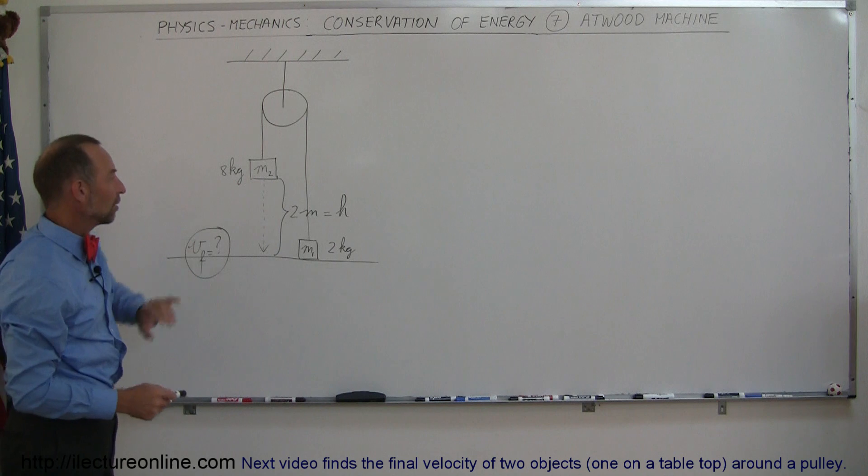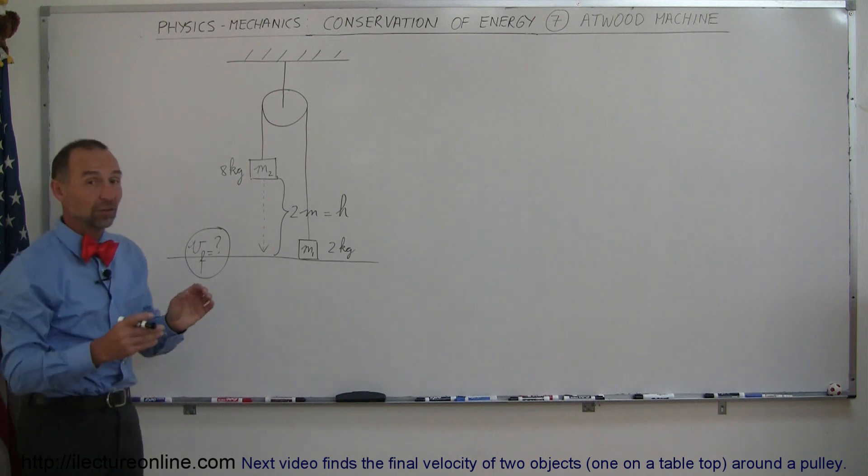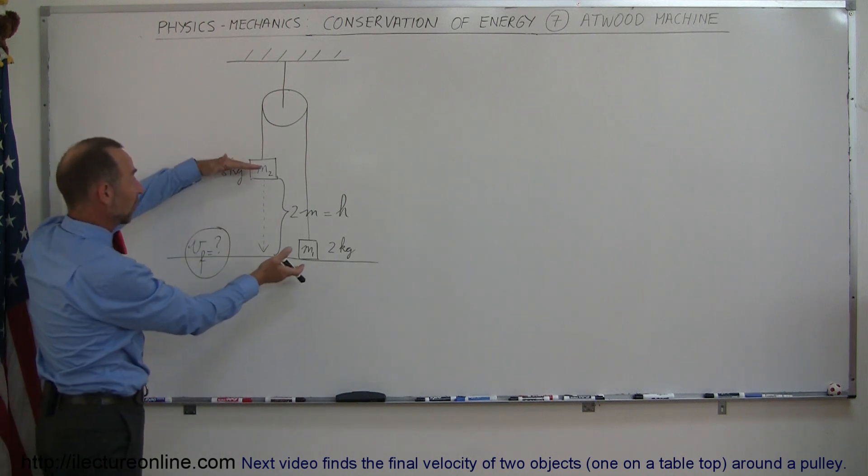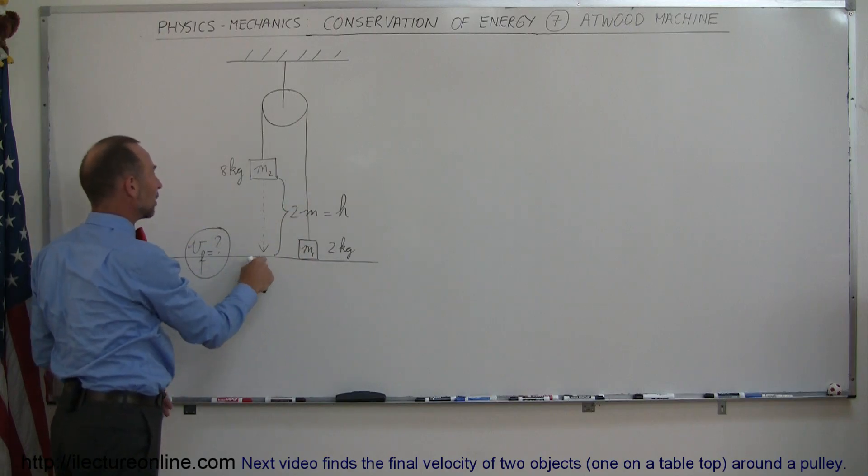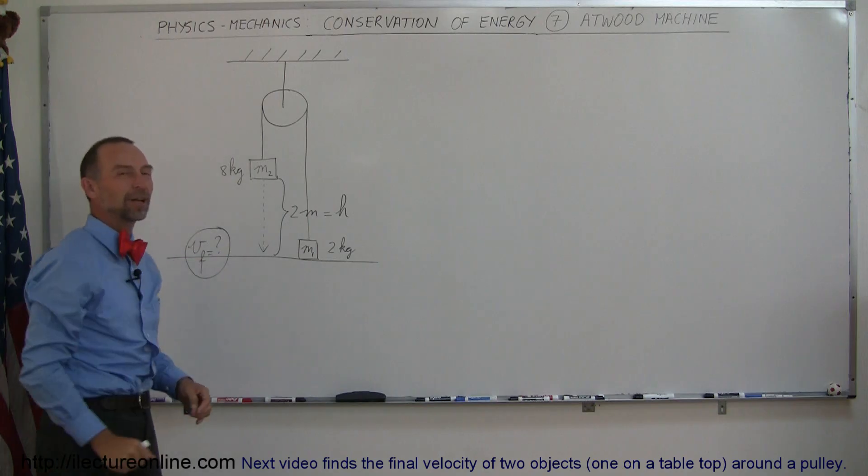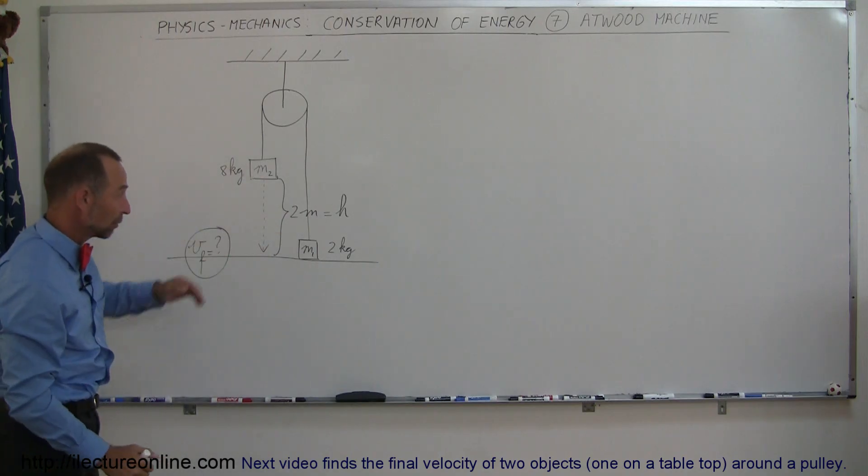The 8 kilogram mass is 2 meters above the ground, and the question is, when we let this thing go, and this large mass is accelerating downward, small mass accelerating upward, what would be the speed of this large mass just before it hits the ground after it's traveled downward for 2 meters?